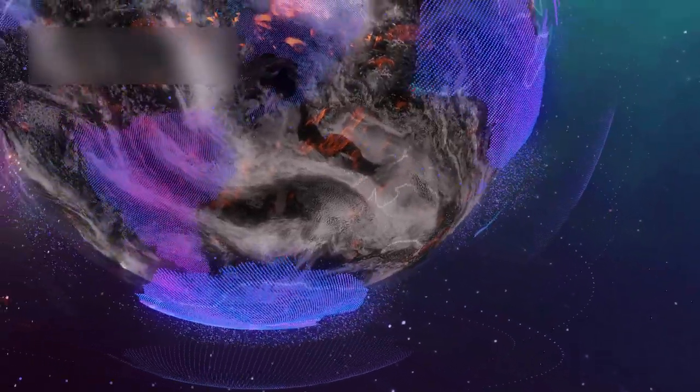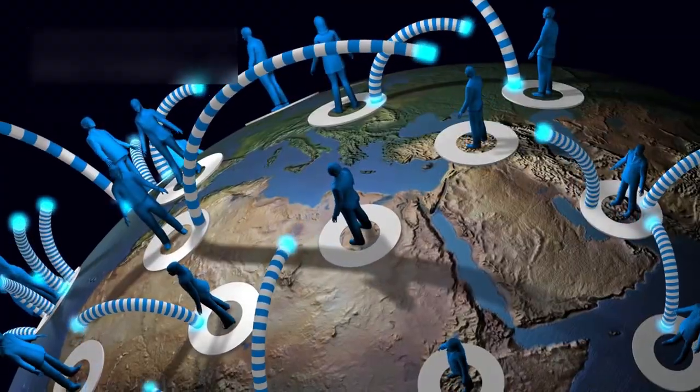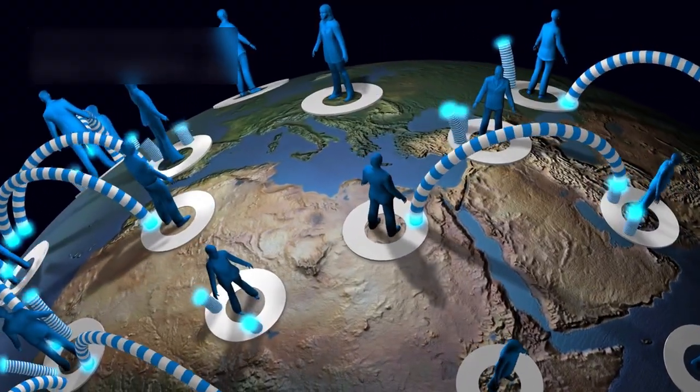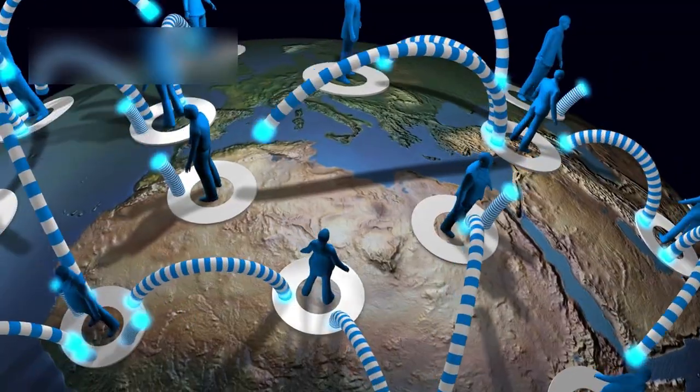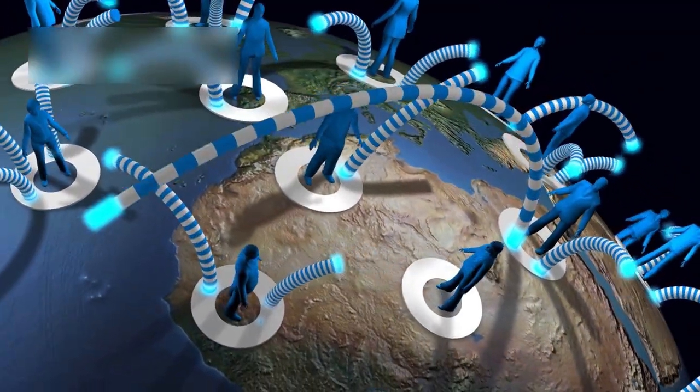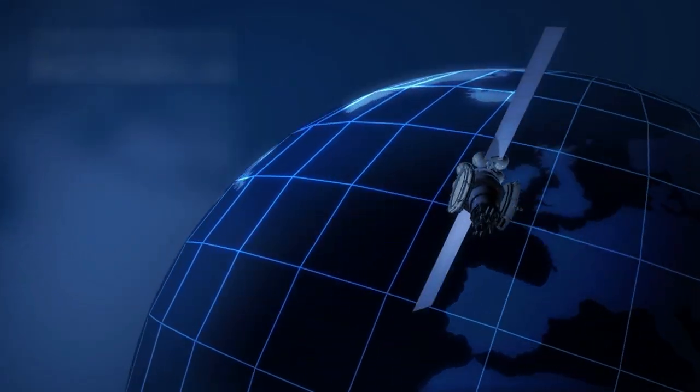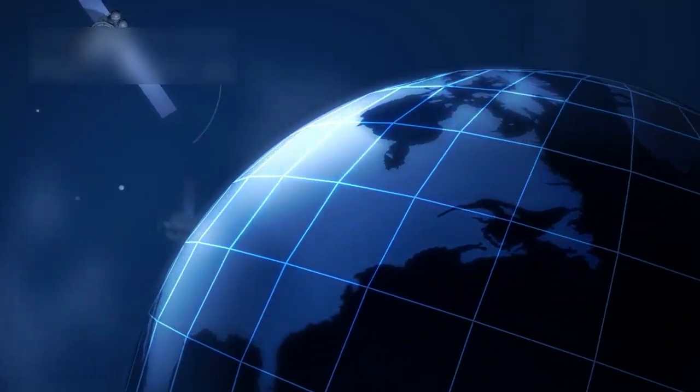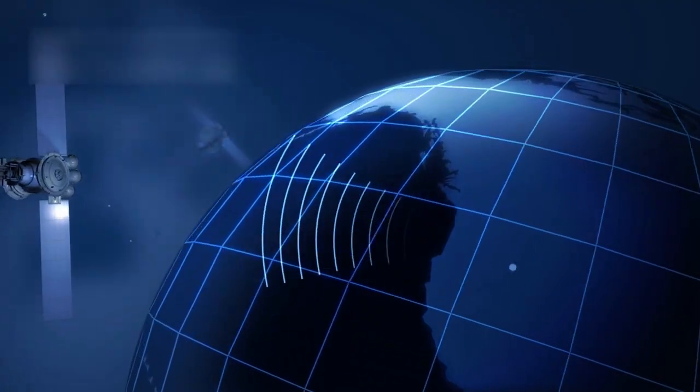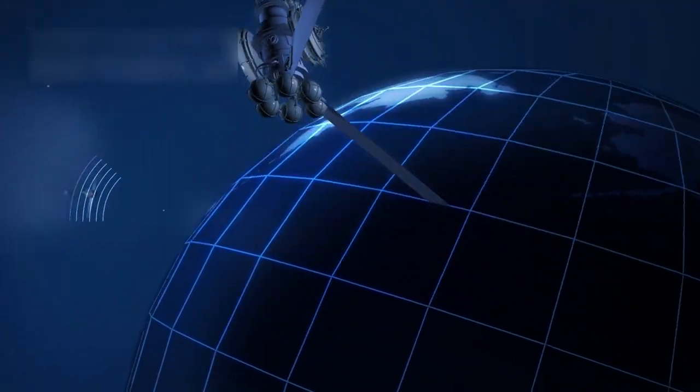These discussions are shaping a new field known as astroethics. On the other side, astronomer Avi Loeb points out that Earth has already been broadcasting radio signals for over a century. If anyone is listening, they already know we exist. Still, any message sent today would take over 120 years to arrive, making communication a matter for future generations.